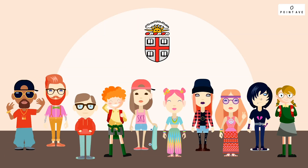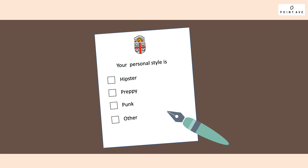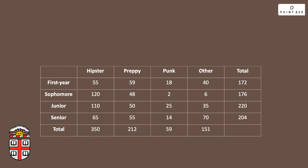A survey asks Brown University students in the first week of school how they would describe their personal style, choosing from hipster, preppy, punk, or other. The results are then sorted by class year and reported in the table below.